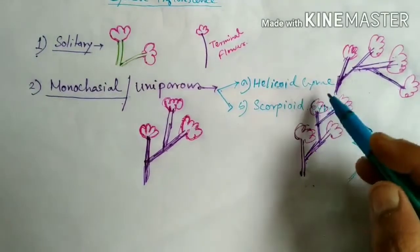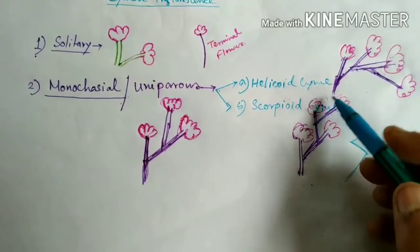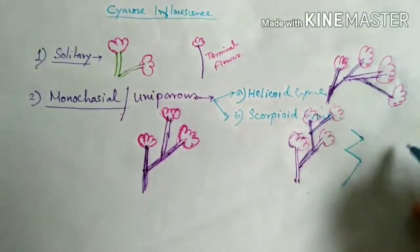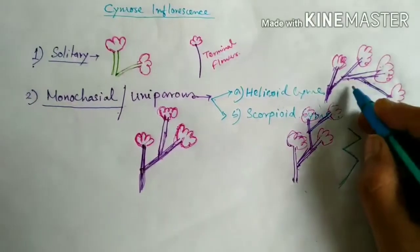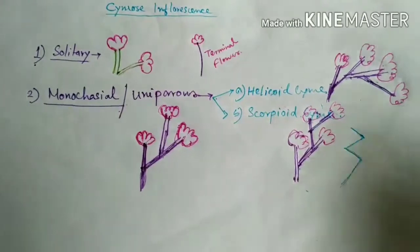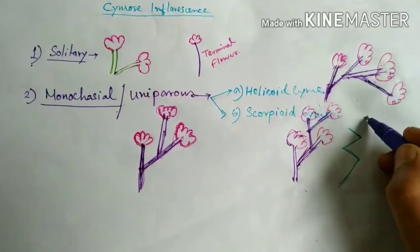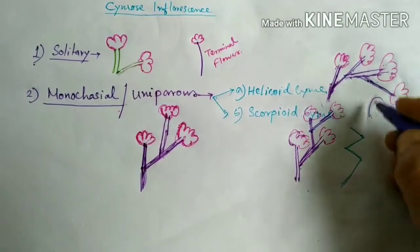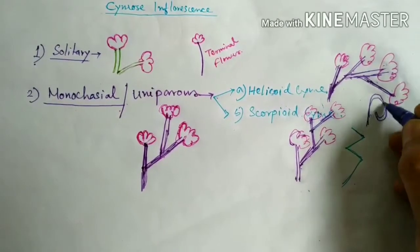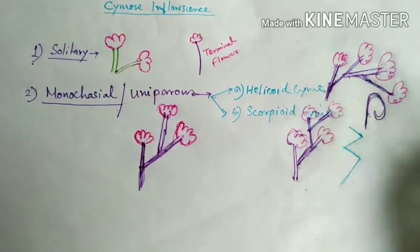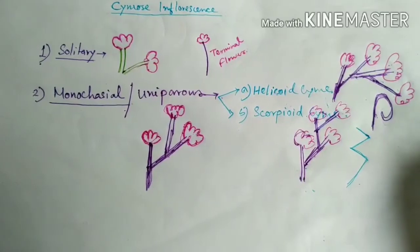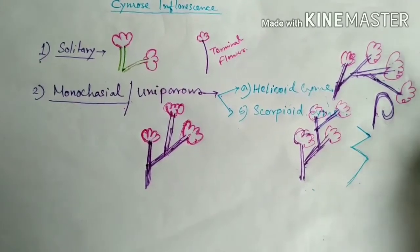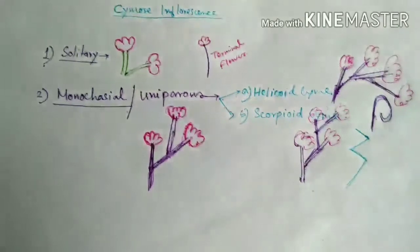In helicoid cymose inflorescence, all flowers produce from the same direction, and finally a coil-like inflorescence is seen. This is about monochasial or uniparous type inflorescence.